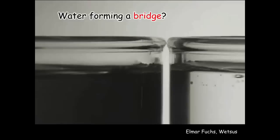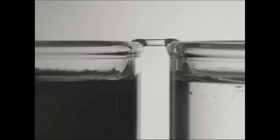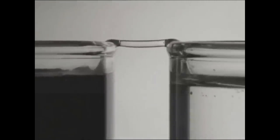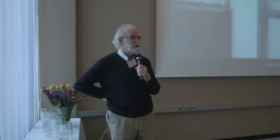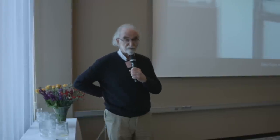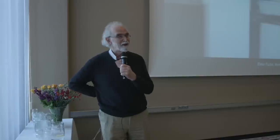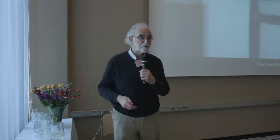Here's another one: the so-called water bridge. It's not our work, but the work of Elmar Fuchs, though we've duplicated it. You take two beakers, put them rim to rim filled with water, then put two electrodes in and apply a high voltage. A bridge forms between the two — and if you move one beaker away, the bridge persists essentially indefinitely, extending up to four centimeters. So what's the explanation? I'm presenting these to illustrate that although you think you know about water, if you did know, you'd be able to explain all this.